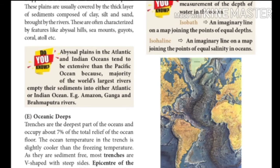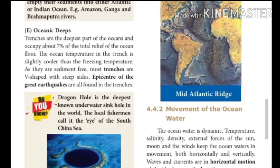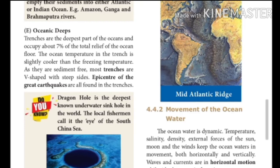Next, oceanic deeps: trenches are the deepest part of the oceans and occupy about 7% of the total relief of the ocean floor. The ocean temperature in the trench is slightly cooler than the freezing temperature. As they are sediment free, most trenches are V-shaped with steep sides. Epicenters of great earthquakes are all found in the trenches.